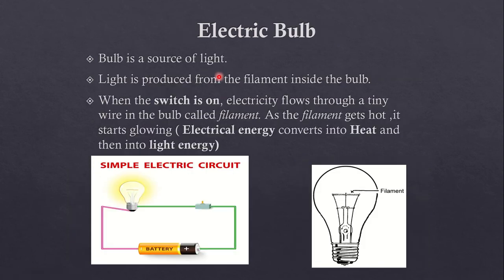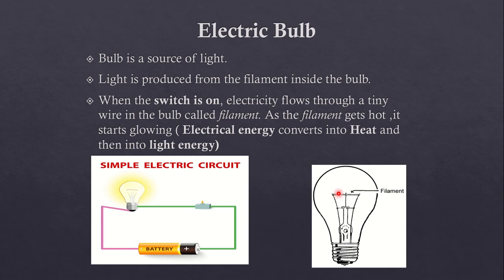Next topic is the electric bulb. A bulb is a source of light. Where is light produced in the bulb? Light is produced from the filament inside the bulb. Inside the bulb there is a filament. This is a glass case of the bulb and this is the metal case of the bulb. There are two cases: one is the glass case and the bottom is the metal case. In the glass case of the bulb, there are two thick wires.